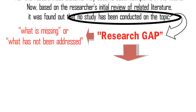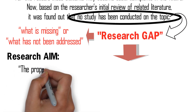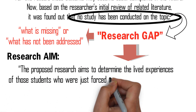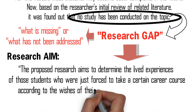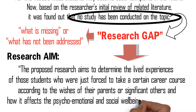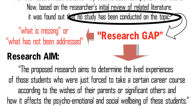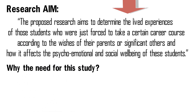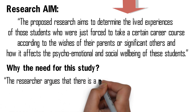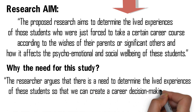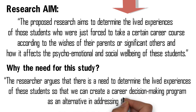And with this research gap, we can now formulate the research aim, which reads: 'The proposed research aims to determine the lived experiences of those students who were just forced to take a certain career course according to the wishes of their parents or significant others, and how it affects the psycho-emotional and social well-being of these students.' And if one may ask why the need for this study, the researcher may add: 'There is a need to determine the lived experiences of these students so that we can create a career decision-making program as an alternative in addressing the problem.'